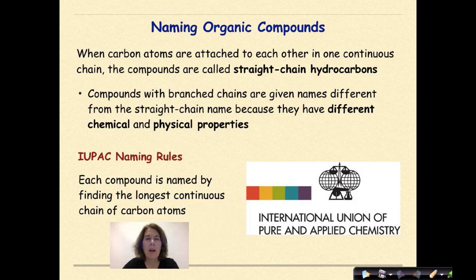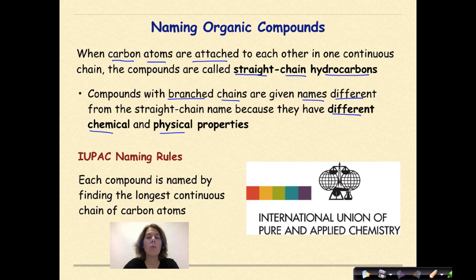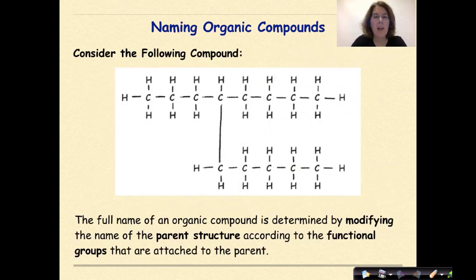Naming organic compounds. When carbon atoms are attached to each other in one continuous chain, the compound is called a straight-chained hydrocarbon. Compounds with branched chains are given names different from the straight chain name because they have different chemical and physical properties, where each compound is named by finding the longest continuous chain of carbon atoms.